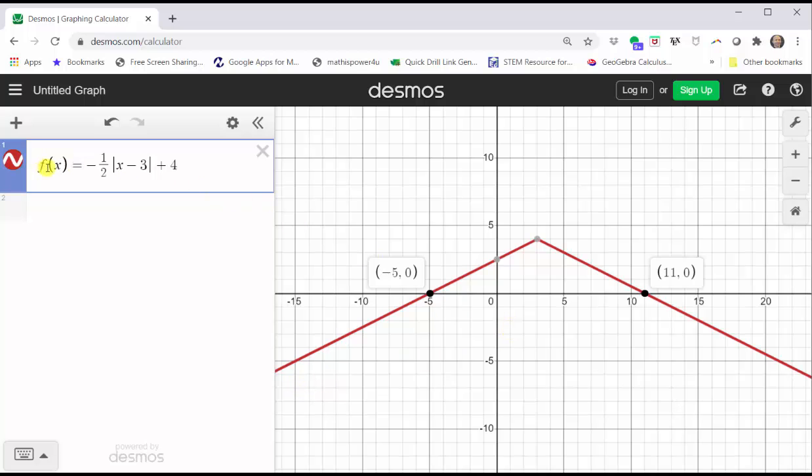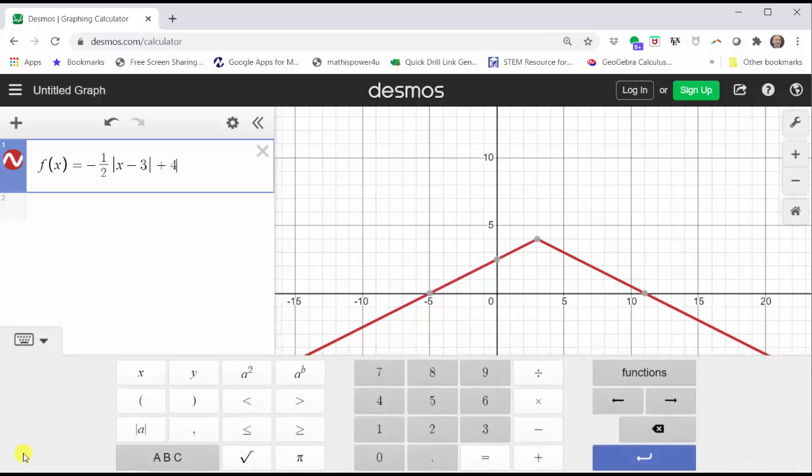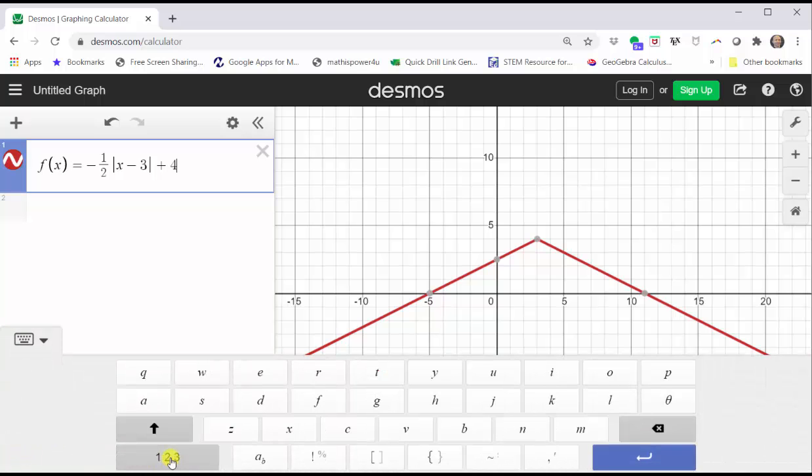To make the restriction, we click to the right of the function and then we use curly brackets or squiggly brackets, which if we go back to the Desmos keypad and then click the ABC button, you're in the middle of the bottom here.